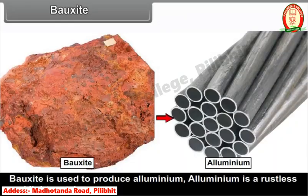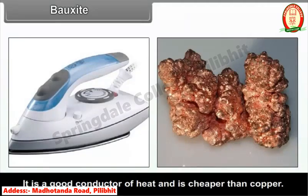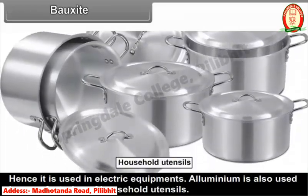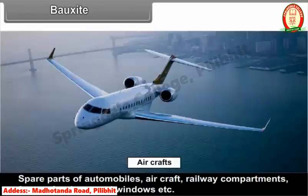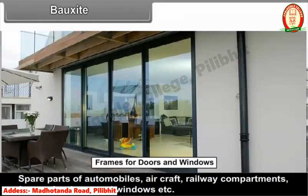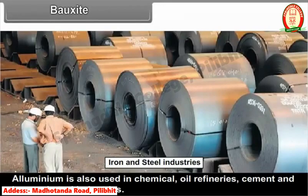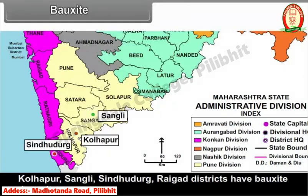Bauxite is used to produce aluminum, which is a rustless and light metal. It is a good conductor of heat and is cheaper than copper, making it useful in electric equipment. Aluminium is also used in manufacturing household utensils, automobile spare parts, aircraft, railway compartments, and frames for doors and windows, as well as in chemical, oil refinery, cement, and iron and steel industries. Maharashtra is the leading bauxite-producing state in India. Kolhapur, Sangli, Sindhudurg, and Raigad districts have bauxite deposits.